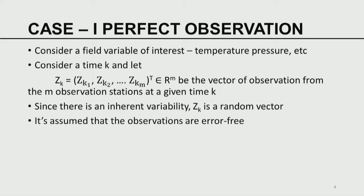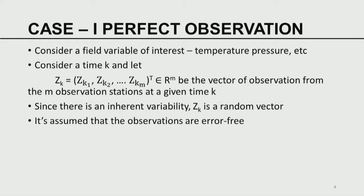The field variable of interest is a scalar field variable — it could be temperature, pressure, etc. Consider time k, noon January 1st 2016 as an example — k is a specific instant in time. There are m observational occasions, so at that time k there are m observations of the scalar field variable. I have an m-vector, the components of which are z_k1, z_k2, ..., z_km. These are the observations available from the m observation stations.